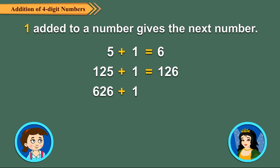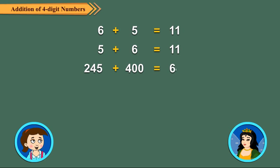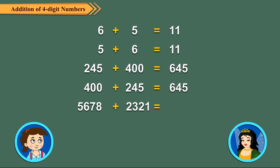Neha, now I will tell you an important property. You know, when we add 2 or more numbers, the order of the numbers does not matter. Yes, Tina, I learnt it in class 2. Good Neha, it is called the order property of addition. Let us see these examples.